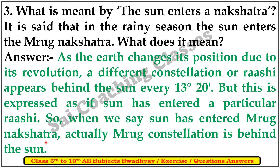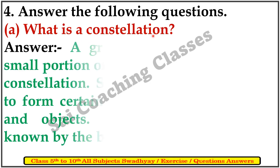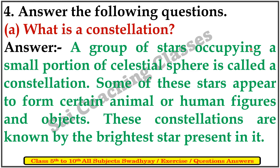When the sun has entered a particular rashi, actually the constellation is behind the sun. What is meant by constellation? A group of stars occupying a small portion of the celestial sphere is called a constellation. Some of these stars appear to form certain animals, human figures, and objects. These constellations are known by the brightest stars present in them.